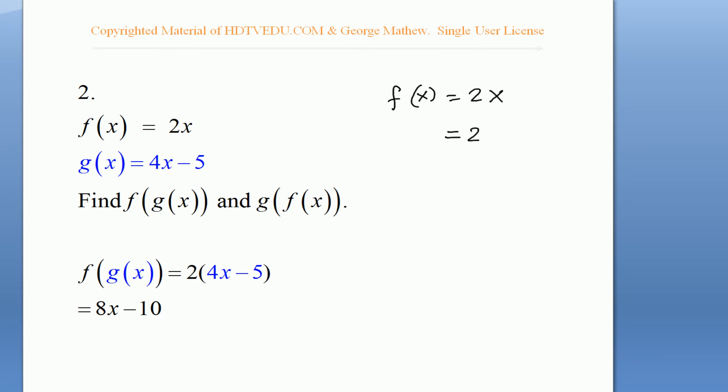2. And what is g of x? 4x minus 5. And this is 2 times 4x minus 2 times 5. And what do we get? 8x minus 10.